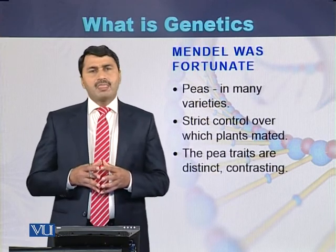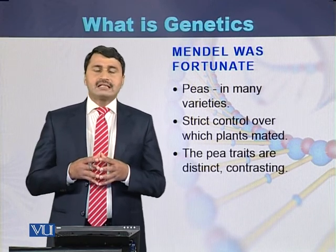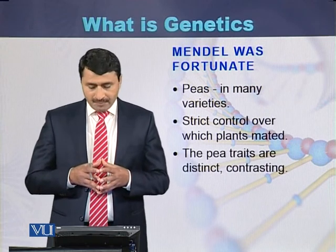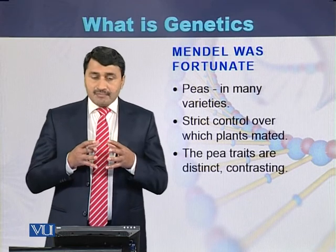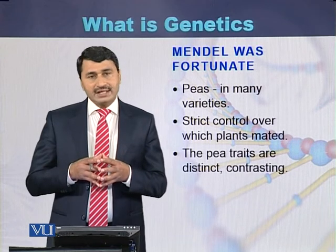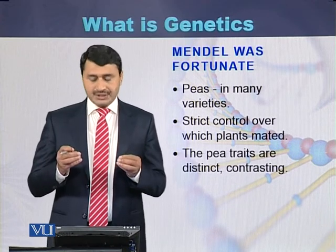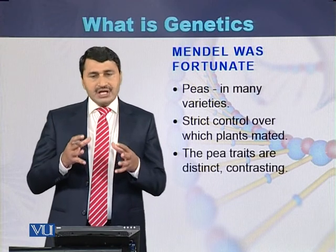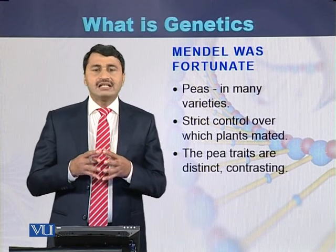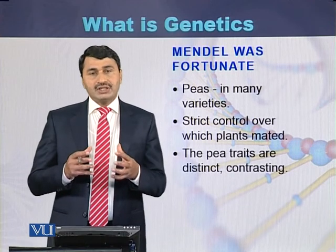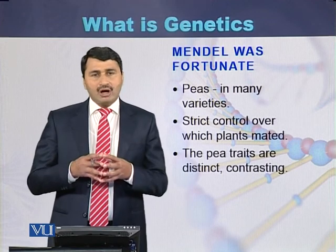It is said that Mendel was fortunate because he selected the garden pea as an experimental plant. The pea plant was available in many varieties, and Mendel had strict control over the different plants he mated. The traits of the garden pea were clearly contrasting and clearly distinct from each other, which helped Mendel formulate the laws of heredity.